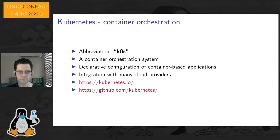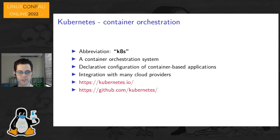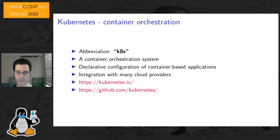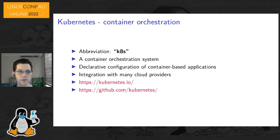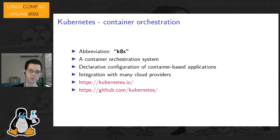Kubernetes is a container orchestration system — if you see k8s or 'kates' written, that's an abbreviation for Kubernetes. It works with a cluster of machines with distributed configuration, distributes application workloads across the cluster, and has a declarative configuration format typically using JSON or YAML. It has APIs for most languages — particularly Go, but also Python, Haskell, and many others — and integration with most cloud providers. All Kubernetes documentation lives at kubernetes.io and source code at github.com/kubernetes.